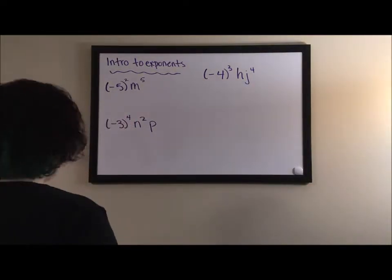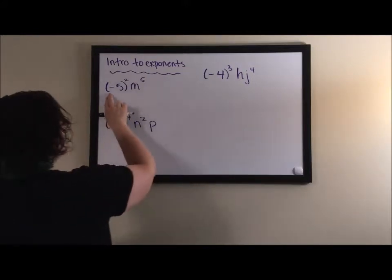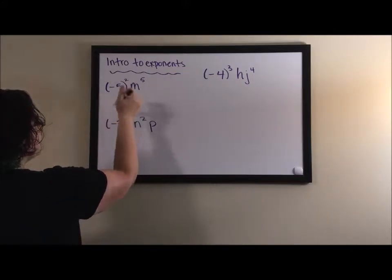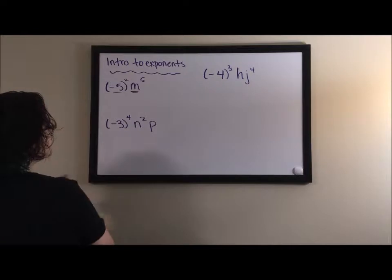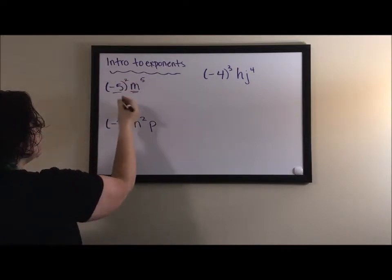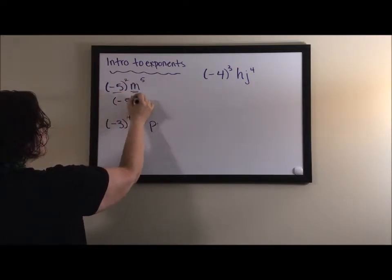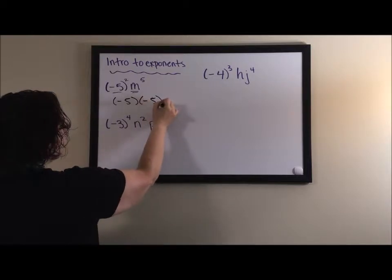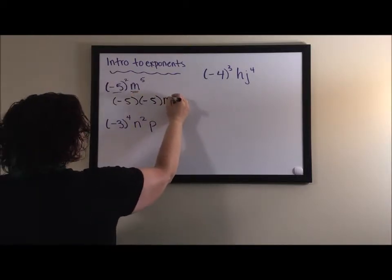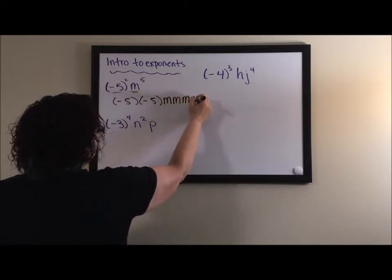And so if we look at this first one, we have a negative five that's one of our bases and the m is the second. It tells us there are two negative fives multiplied together, so negative five times negative five, and there are five m's being multiplied. One, two, three, four, five.